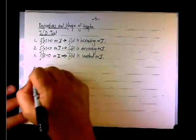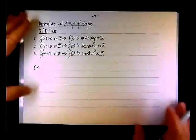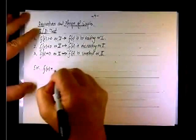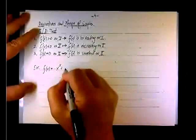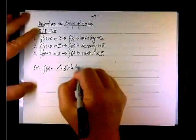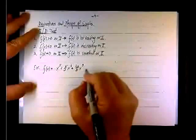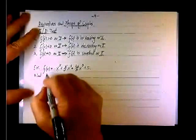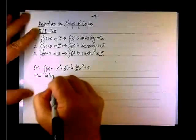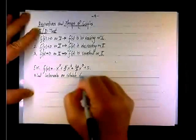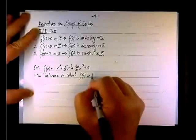Now I'll move to an example to see how we use this in identifying intervals on which the function is either increasing or decreasing. Let's look at the following function: f of x equals negative x to the fifth power plus five-halves x to the fourth plus forty-thirds x cubed plus 5. We need to find intervals on which f of x is increasing or decreasing.